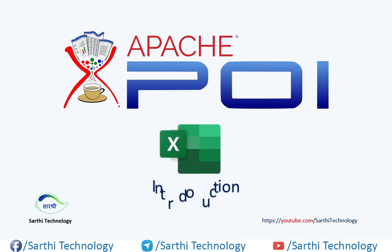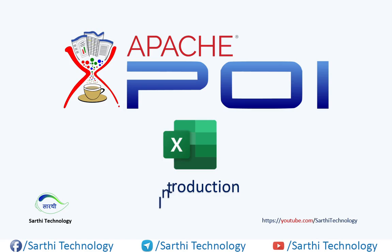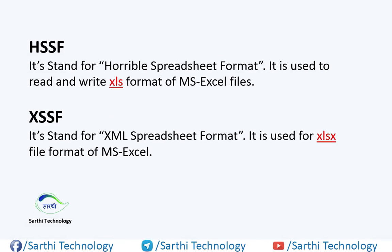I want to discuss two important classes that are needed for the Excel part. Here you can see one is HSSF and another is XSSF. HSSF is used for XLS format and XSSF is used for XLSX format. The method names and their uses are the same in both classes, so you don't need to learn them separately. That's why we will keep our focus on XSSF, which I will use throughout this entire video series.